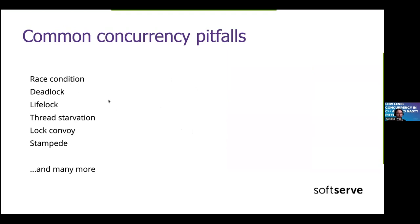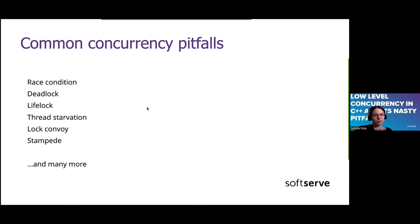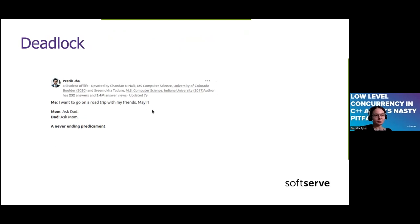Apart from deadlock, there are also different common concurrency pitfalls. Some of them, like race condition, are really common and well-known, but there are more: apart from deadlock there can be a livelock, thread starvation, and others. A nice real-life representation of deadlock: mom is asking dad to answer someone, and dad is asking for mom's answer — they will never get it, so somebody will unfortunately never go on a road trip.